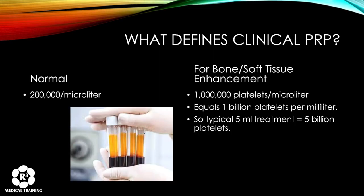When talking about clinical PRP, normal blood has about 200,000 platelets per microliter on average. Studies looking at bone and soft tissue enhancement show you need to increase that to a million platelets per microliter — which is a billion platelets per milliliter. So in a typical five-milliliter treatment, that would be five billion platelets.